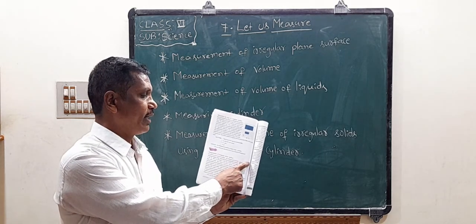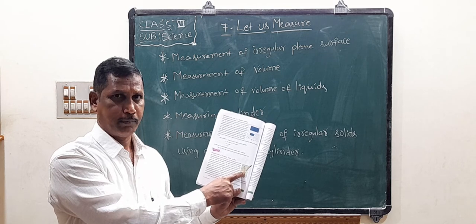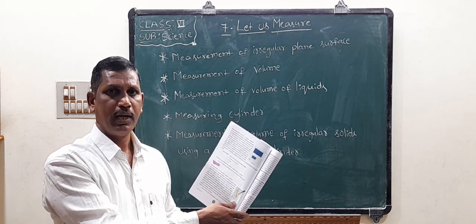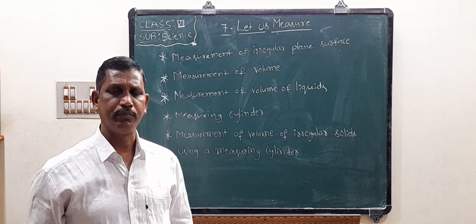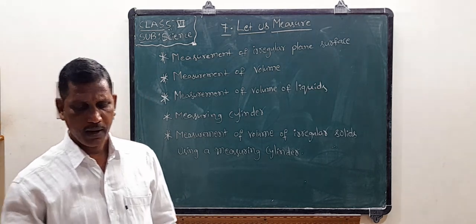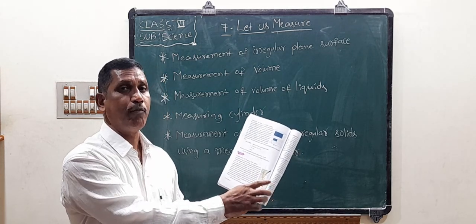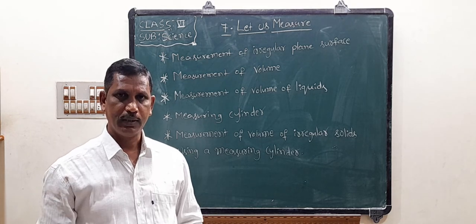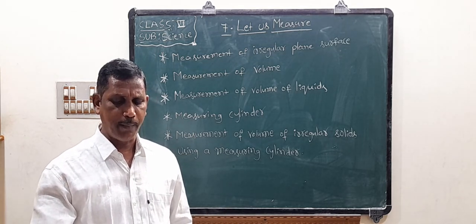See this diagram. A graph paper is there and a leaf is placed on the surface of this graph paper. Draw the border line of this leaf with the help of a pencil. Let us find out the area of a surface - say a banana peel or a leaf which has an irregular shape. Place the leaf on a graph paper as shown in the figure. Make the boundary of the leaf on the graph paper with a pencil.